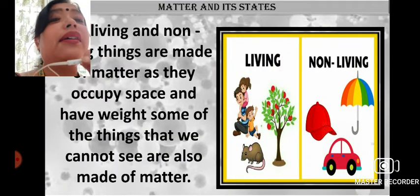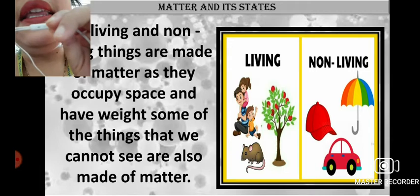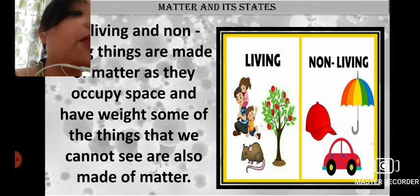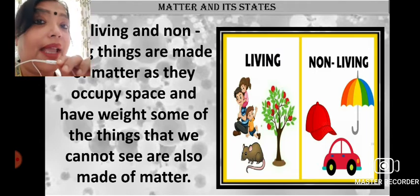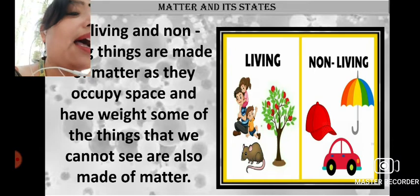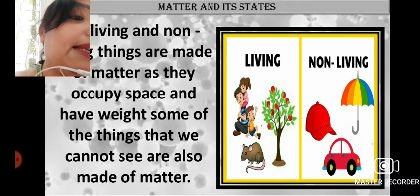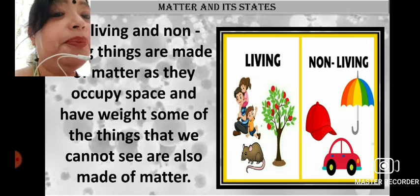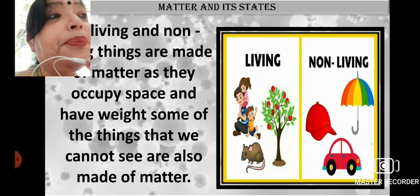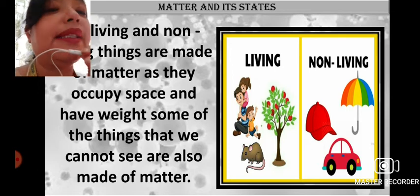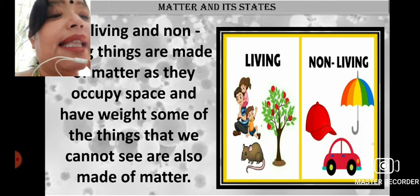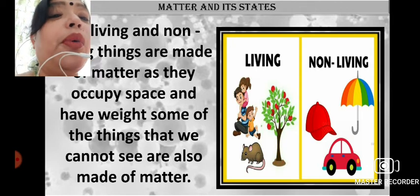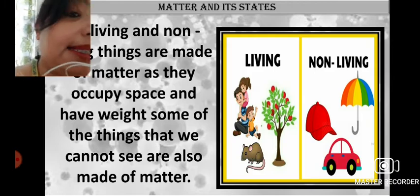We can divide things as living and non-living. Living things are plants, animals, human beings. On the other hand, non-living things like an umbrella or a car are those which haven't got life. But both of these things have one thing in common: they occupy space and have weight. Some things that cannot even be seen are also made up of matter — they too occupy some space and have weight.